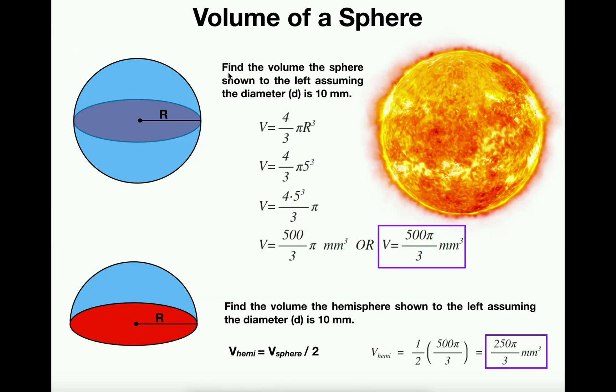In our first problem we want to find the volume of the sphere shown to the left, assuming that the diameter of the sphere is 10 millimeters. Now if the diameter is 10 millimeters, the radius would be 5 millimeters.